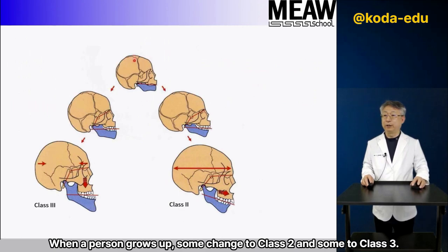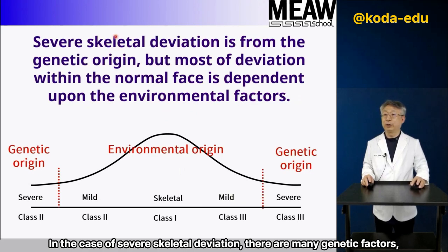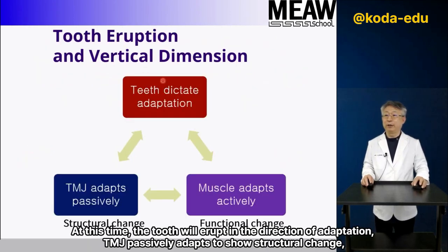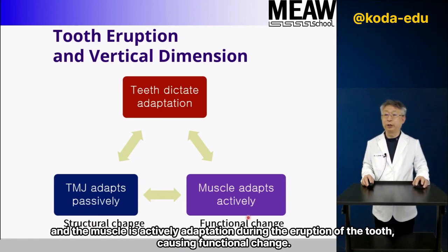When a person grows up, some change to class II and some to class III. Is it genetic or environmental? In the case of severe skeletal deviation, there are many genetic factors. But if you have a normal profile, environmental factors will also have a lot of influence. At this time, the tooth will erupt in the direction of adaptation. TMJ passively adapts to show structural change, and the muscle actively adapts during the eruption of the tooth, causing functional change.